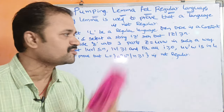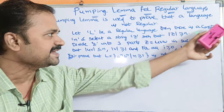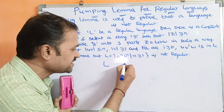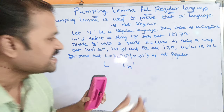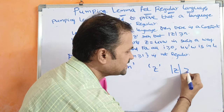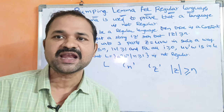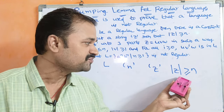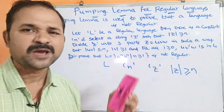Let L be a regular language. Then there is a positive integer constant N. We have to select a string Z such that |Z| is greater than or equal to N. So mod means length of the string, and the length must be greater than or equal to N, where N is a positive number.